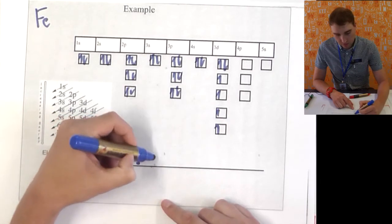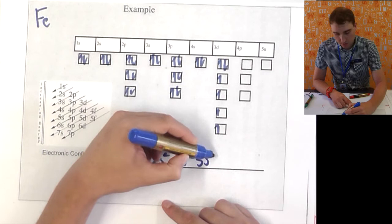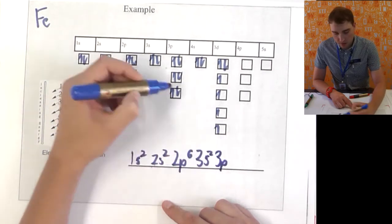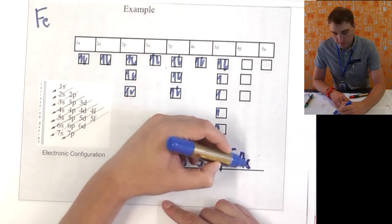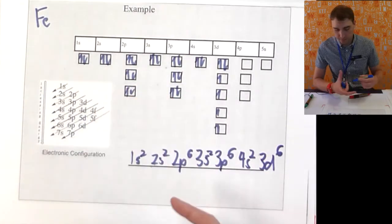We'll write out the electron configuration to start with. We've got 1s2, 2s2, 2p6, 3s2, 3p6, 4s2, 3d6.